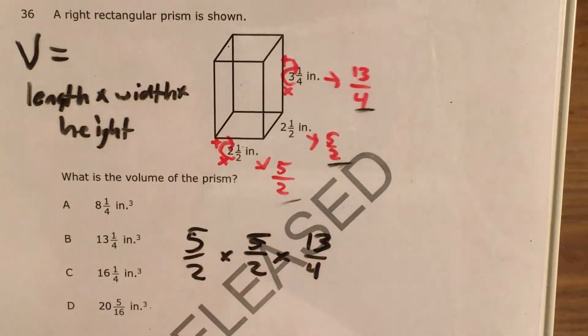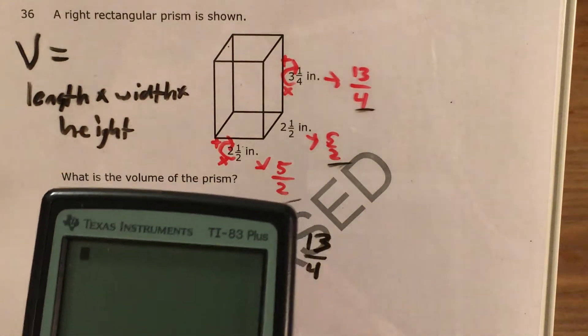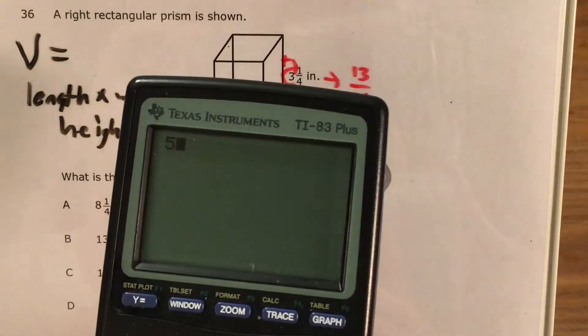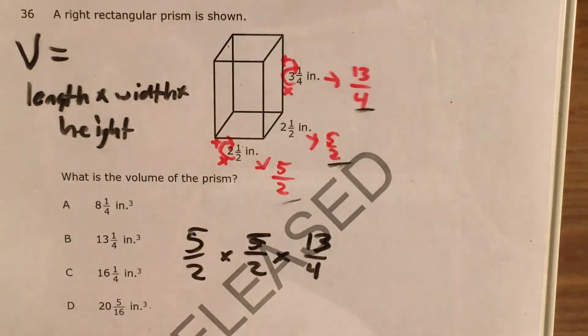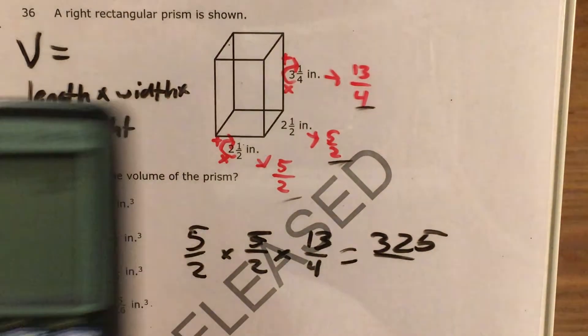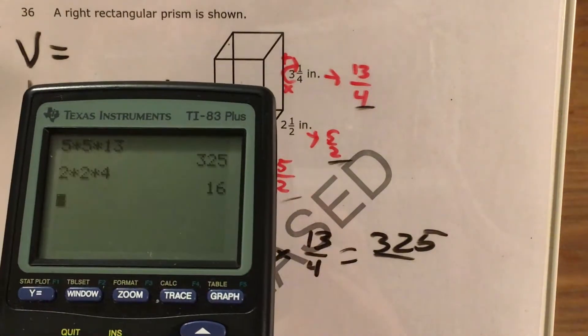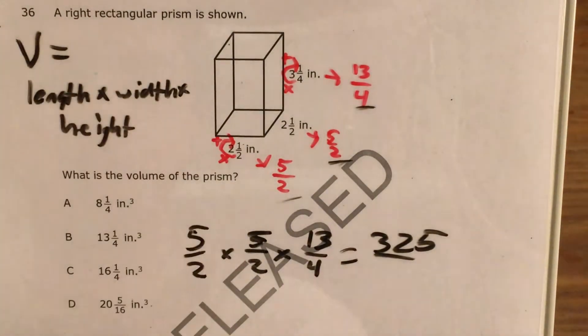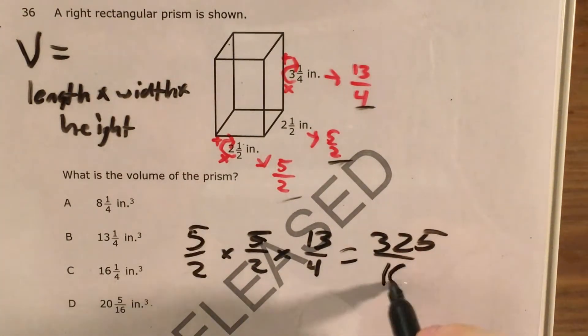That's 5 halves times 5 halves times 13 fourths. If you've seen any problem that involves multiplying two fractions, you know that you just multiply your numerators and multiply your denominators. All I'm going to do is multiply all three numerators. 5 times 5 times 13 is 325. Same thing for my denominators. 2 times 2 times 4 equals 16.